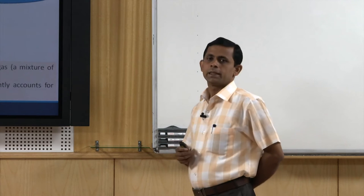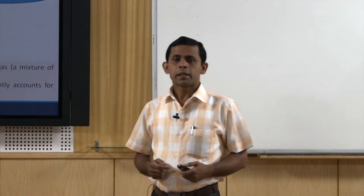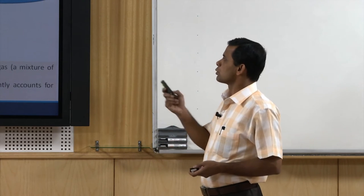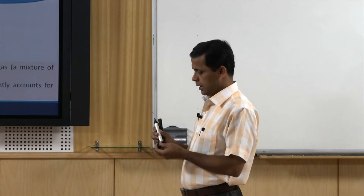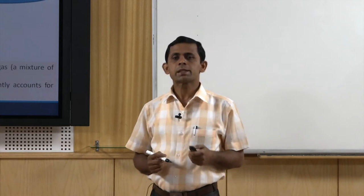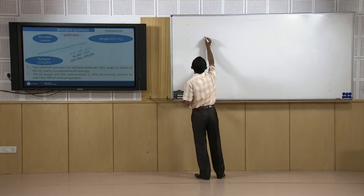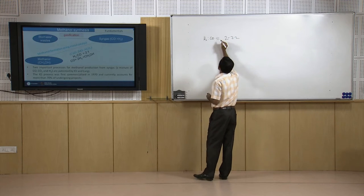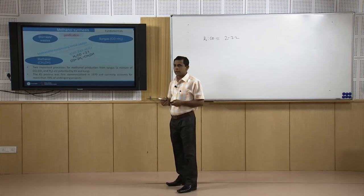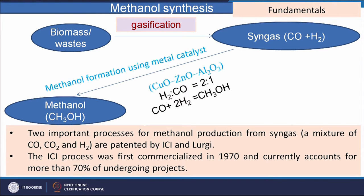Now we will concentrate on methanol synthesis. Methanol synthesis takes place through the syngas route, among many other routes, but here we will focus on the syngas route. Syngas generated from biomass and wastes is reacted in a methanol reactor where a copper-based catalyst is used, with an H₂ to CO ratio of 2 to 2.2. This technology was developed in 1970 by the ICI process and the Lurgi process, which are both commercially important. The ICI process captures around 70 percent of the methanol production market.